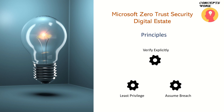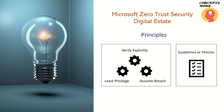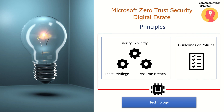There are three principles we've already discussed: first, verifying explicitly each and every digital state in terms of every request coming to access a resource; second, assume breach; and third, least privilege. These are guidelines you have to adhere to, but you'll be mapping these principles with the guidelines or policies you have for your enterprise. Both combined, you have to implement them using the right technology or service.